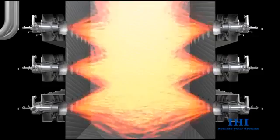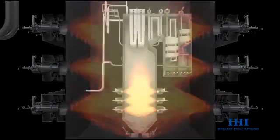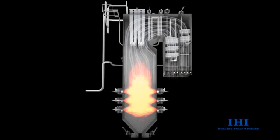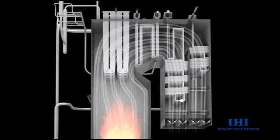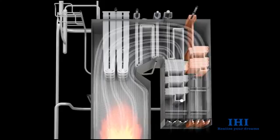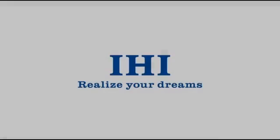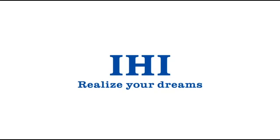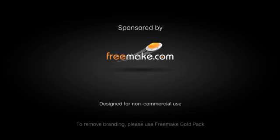The heat recovery area is divided into two separate paths by a partition wall. A reheater is installed in the front side and a primary superheater in the rear side. To control the reheat steam temperature, the combustion gas flow rate in both paths can be controlled by the damper installed at the bottom of the heat recovery area. This is called the parallel path method, which increases efficiency compared to steam temperature controlled by a spray attemperator.